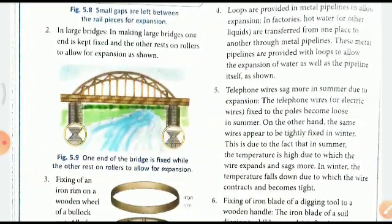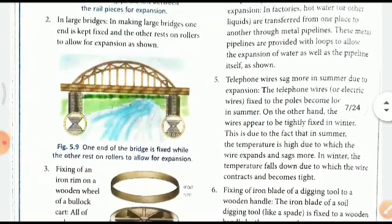In making large bridges, one end is kept fixed and the other end rests on rollers to allow for expansion. If there is expansion, these rollers can adjust everything accordingly.